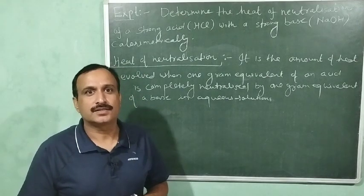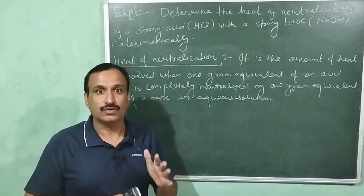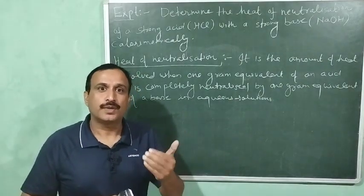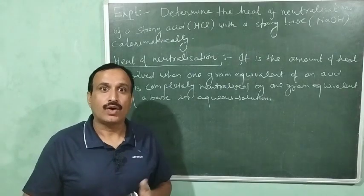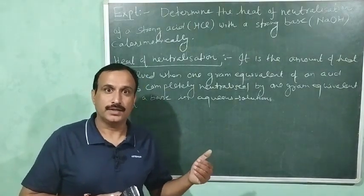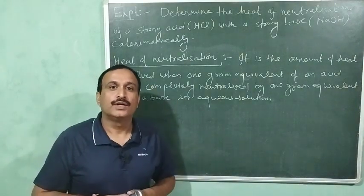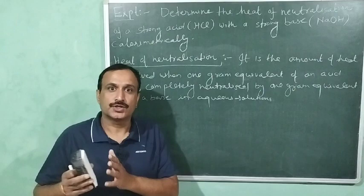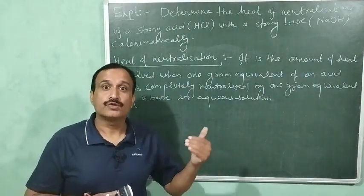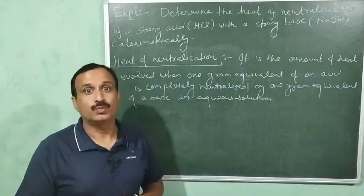In that video I told you that neutralization reactions are always exothermic reactions — heat is evolved during neutralization. I also explained what is one gram equivalent and why we take one gram equivalent of an acid and base instead of one mole. I also told you that the heat of neutralization of any strong acid with any strong base is always constant and equal to minus 57.1 kilojoules per mole.